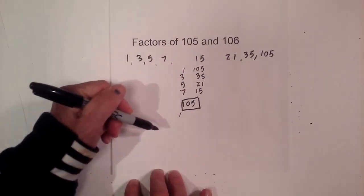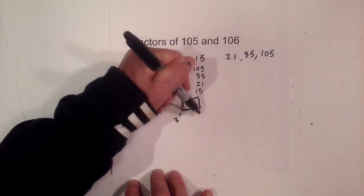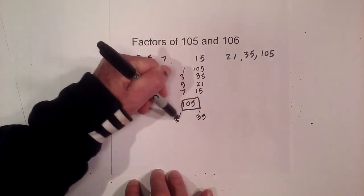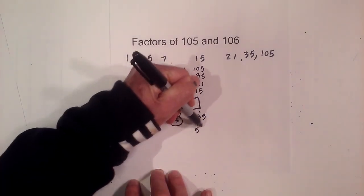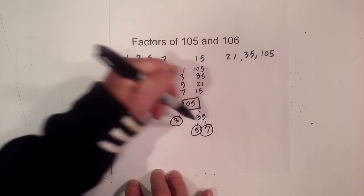It's kind of messy. Let's see, 3 will go into 105, 35 times. Circle the 3 because it is prime, and then 5 times 7 is 105.